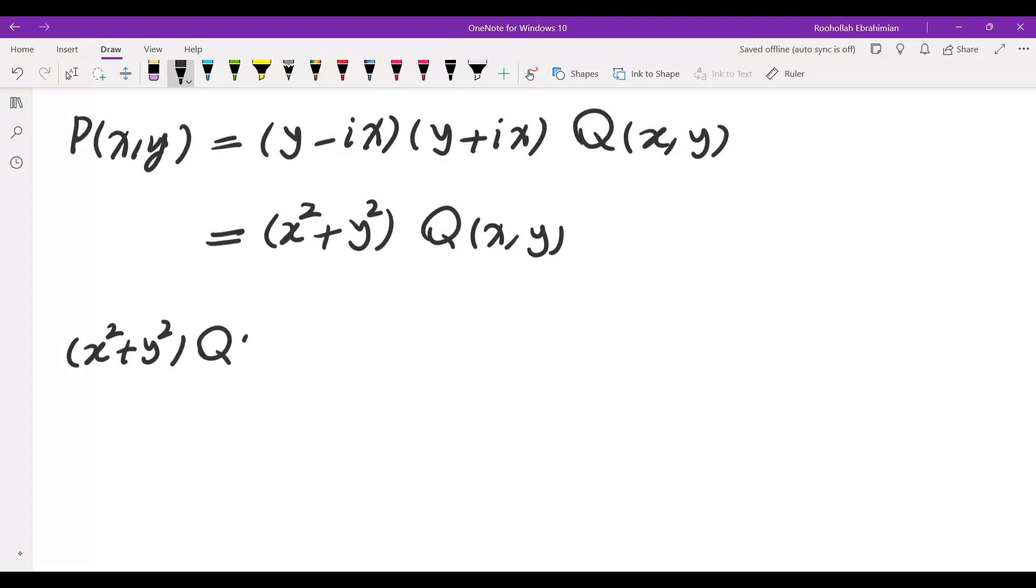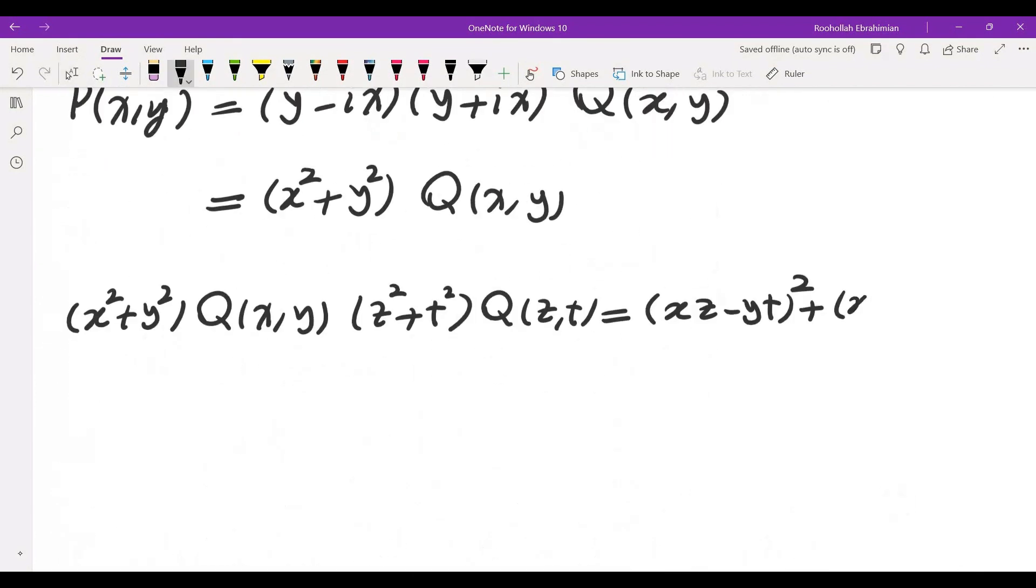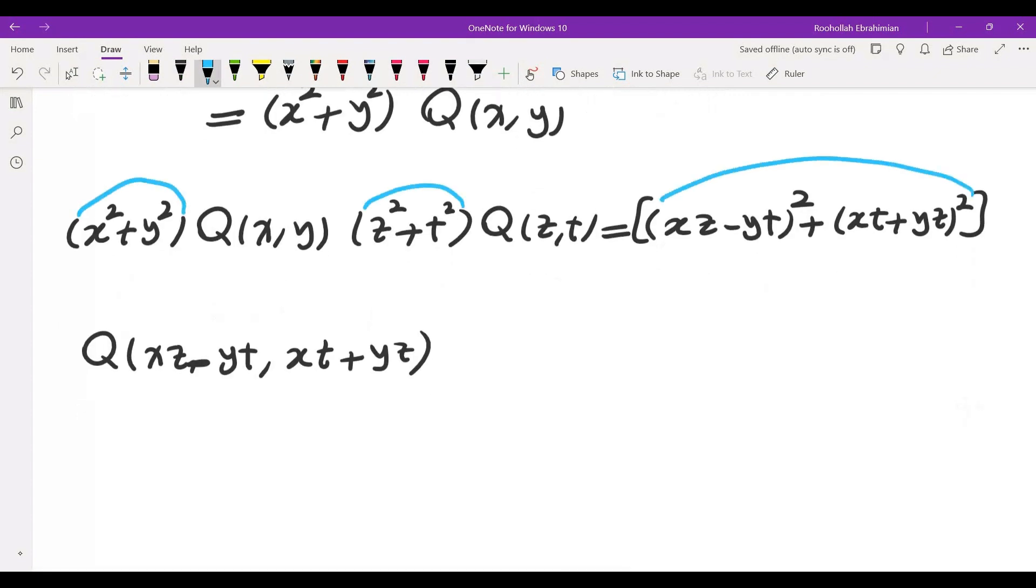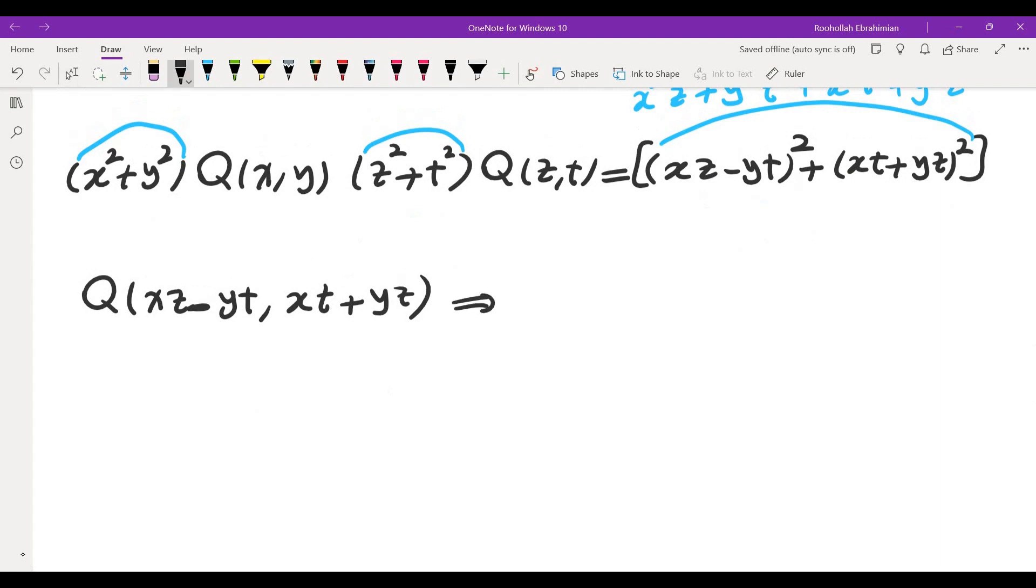X squared plus Y squared Q of X Y Z squared plus T squared Q of Z T is equal to X Z minus Y T squared plus X T plus Y Z so this times Q of X Z minus Y T comma X T plus Y Z but the interesting thing is that this product and this are the exact same thing because if you expand the right side you get X squared Z squared plus Y squared T squared plus X squared T squared plus Y squared Z squared the two X Y Z T term cancels so what we end up getting is that Q is in fact another polynomial satisfying the same identity.